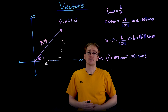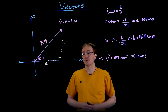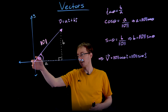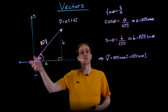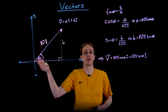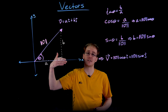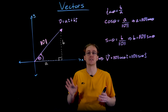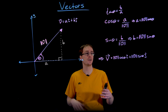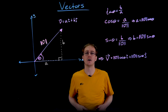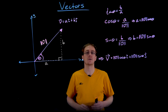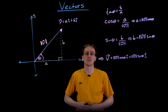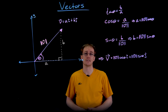We do have to be a little careful sometimes when finding theta. For example, if we end up with an angle pointing in the third quadrant but we want it pointing in the first quadrant, we might have to add 180 degrees to that angle. Since our r value — the magnitude — is always positive, we pretty much just have to adjust that angle by adding or subtracting 180 degrees to get the correct direction.